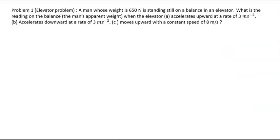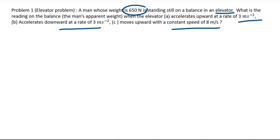Let's start with the elevator problem. A man whose weight is 650 Newtons is standing still on a balance in an elevator. What is the reading on the balance — that is, the man's apparent weight — when the elevator is accelerating upward at 3 m/s², when the acceleration is downward at 3 m/s², and when the elevator is moving with a constant speed of 8 m/s?